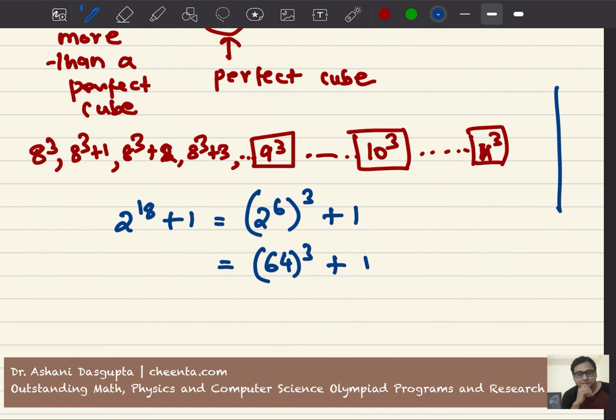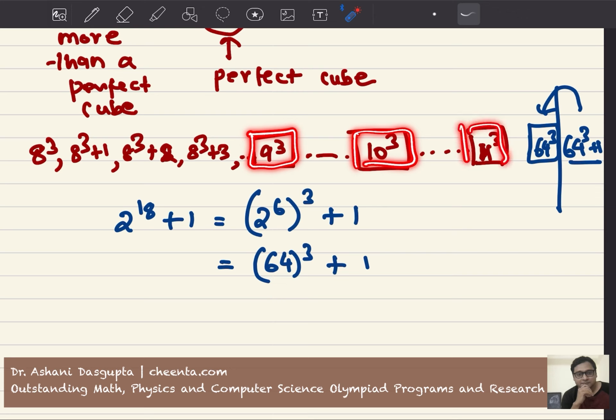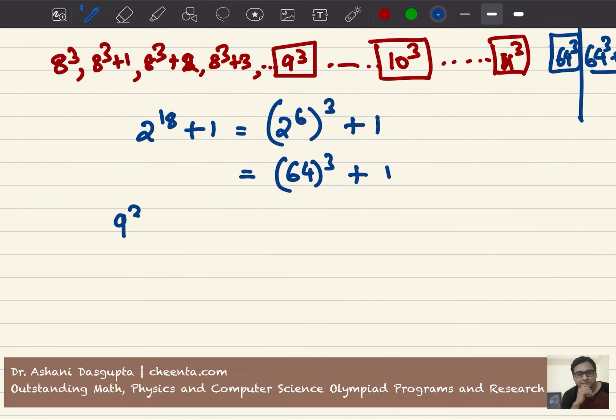So the final limit is 64 cubed plus 1. The number coming before that is 64 cubed, so we can go up to 64 cubed starting with 9 cubed, 10 cubed, 11 cubed. After 64 cubed we have to stop. How many numbers are there? 9 cubed, 10 cubed, 11 cubed, up to 64 cubed. We have total 64 minus 8, which is 56 numbers.